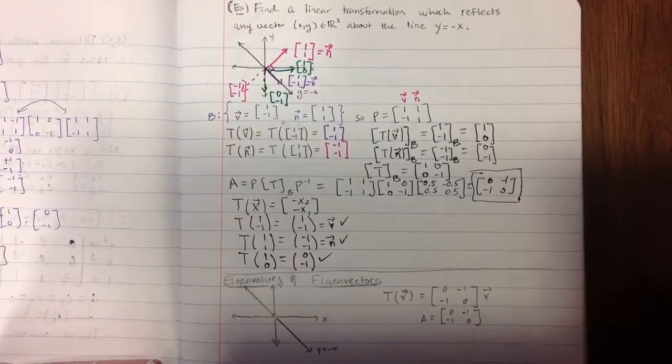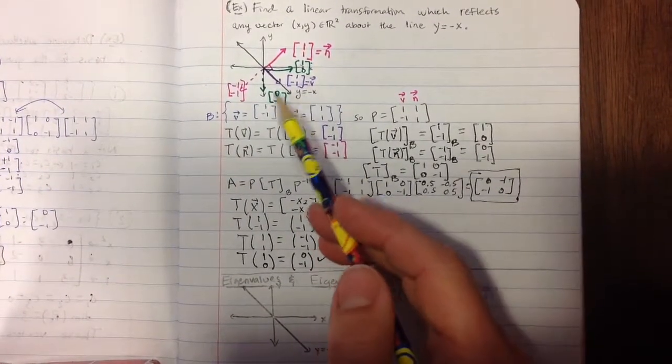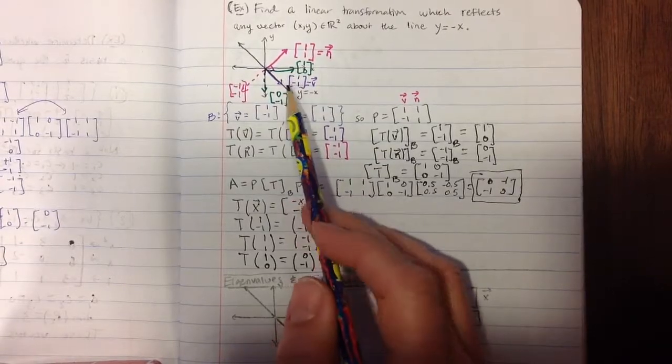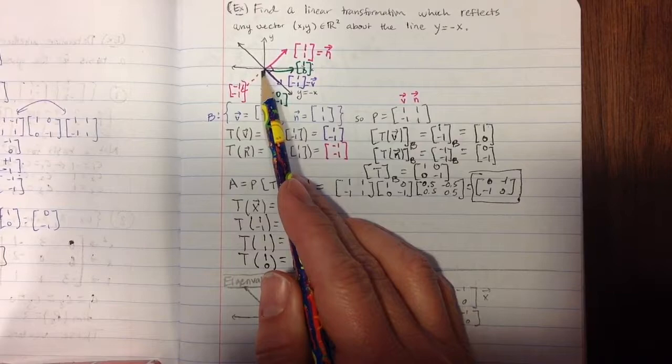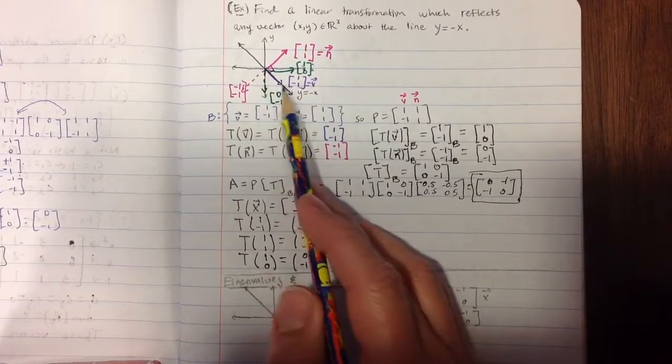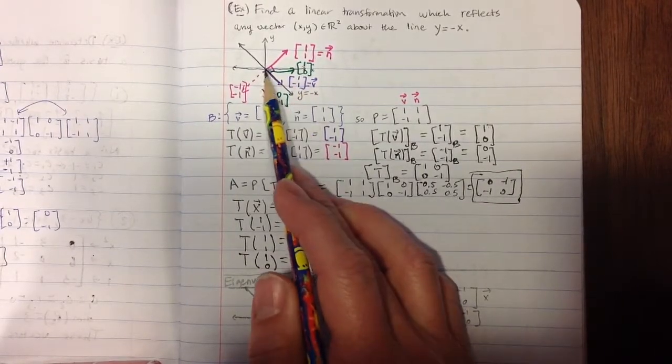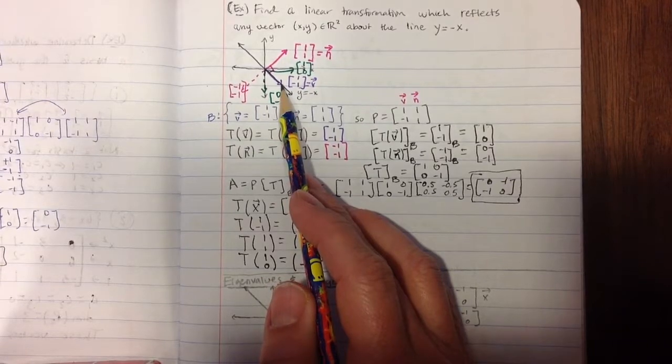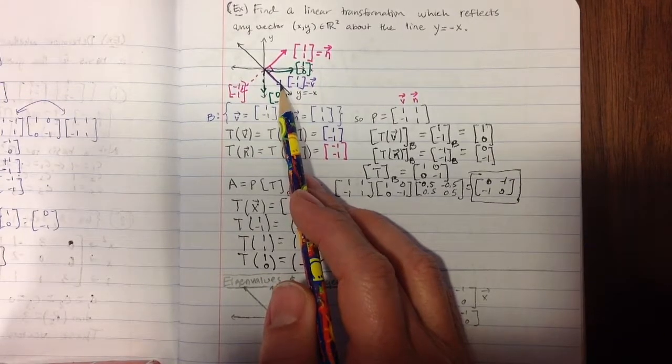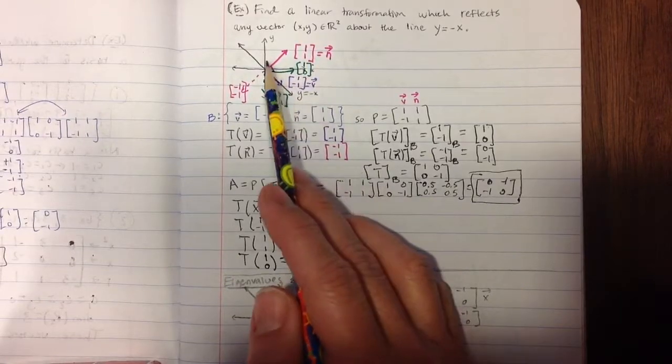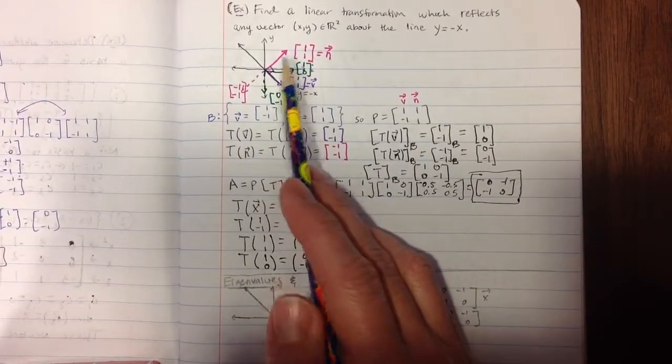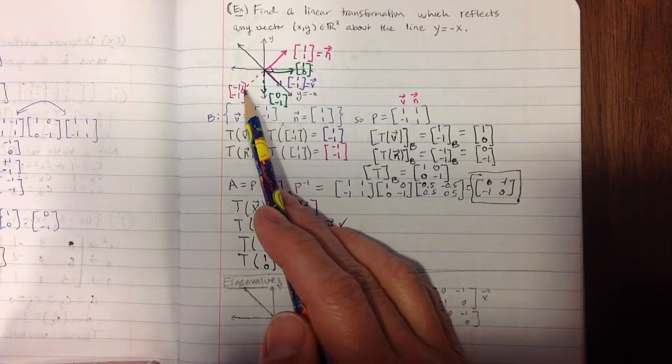Last time we looked at these two vectors because we know what the transformation would do to those. We looked at the vector that was on the line, the [1, -1], because we knew that that would just stay there if it reflected about that line. And then we looked at the vector [1, 1], which was normal to that line.